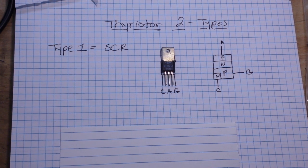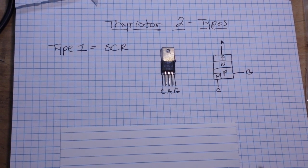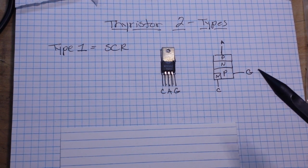Anyway, today we're going to start talking about thyristors. There are two types basically of thyristors: the SCR which is the silicon controlled rectifier, and the triac. We're going to stick to the SCR today. Now thyristors are semiconductor